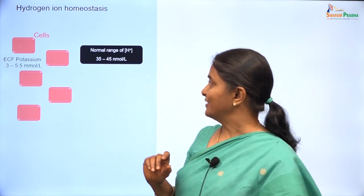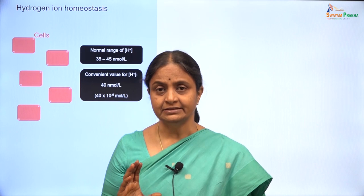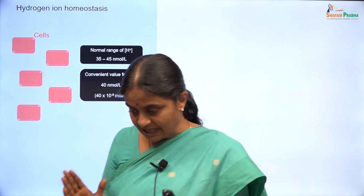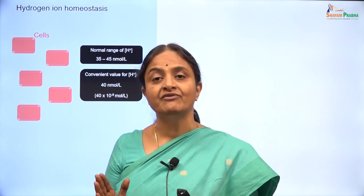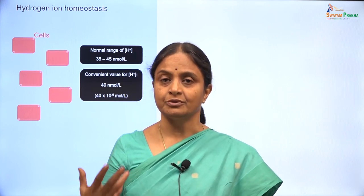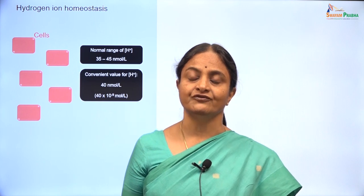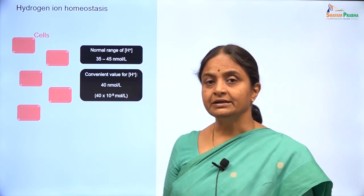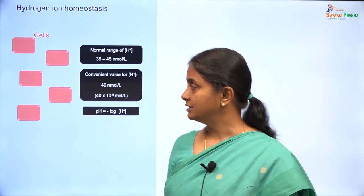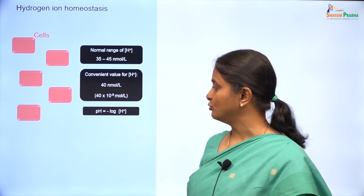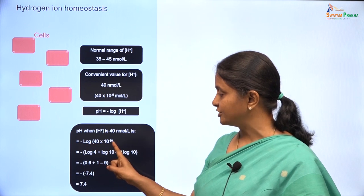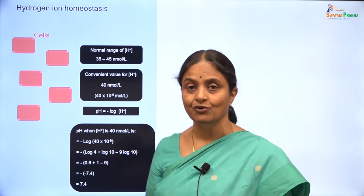Let us take a convenient value of 40 nanomoles per litre for further discussions. Hydrogen ion concentration in plasma is 40 nanomoles or 40 nano equivalents per litre, but we are more used to the pH notation when referring to acid-base status of a solution. pH is the negative logarithm of the free hydrogen ion concentration in solution, and for a concentration of 40 nanomoles per litre, the calculation gives you 7.4 as pH.